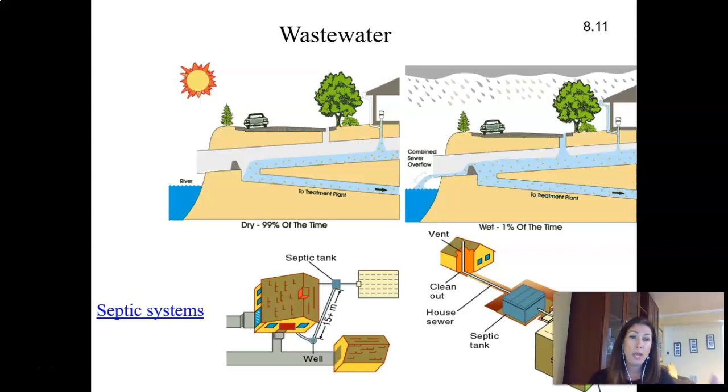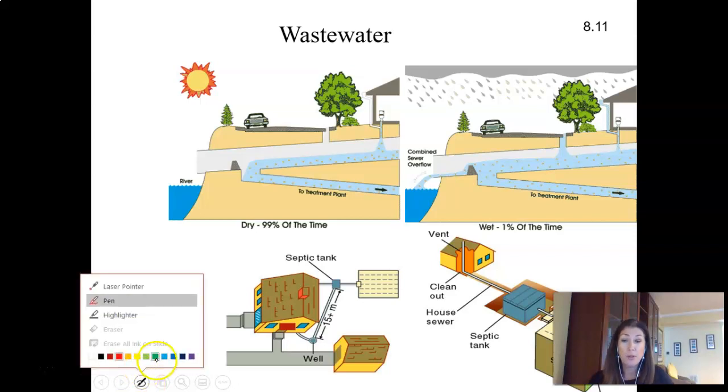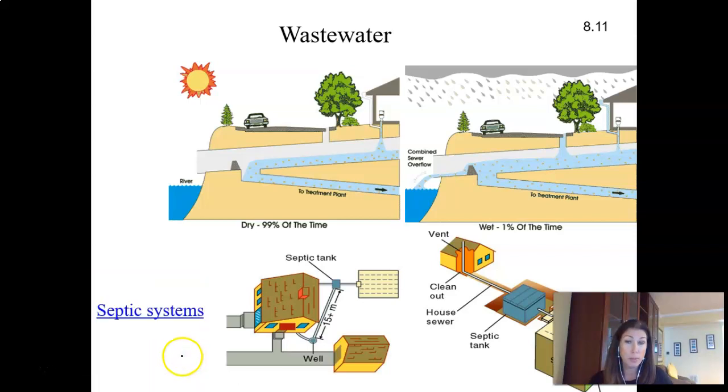So with wastewater in some cities they have what's called a combined sewer system that both wastewater and stormwater might get funneled into a wastewater treatment plant. Now when you have this combined sewer system, here's all our household waste and then you also have a stormwater runoff that might get funneled to a wastewater treatment plant.